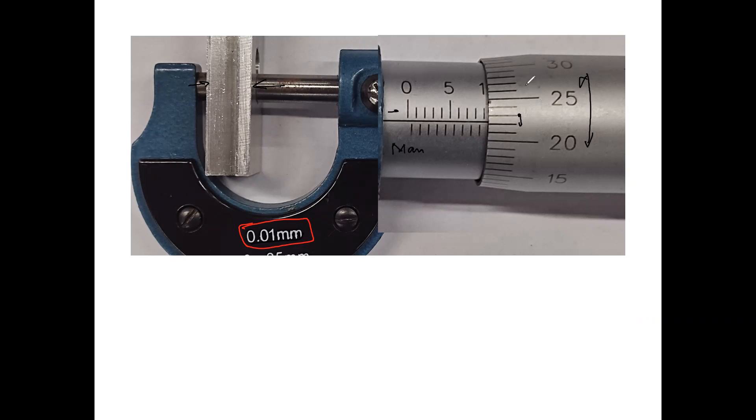So if you have a complete rotation here from zero back to zero, you would move by half a millimeter on the main scale. That's why you have these half millimeter milestones here as well.